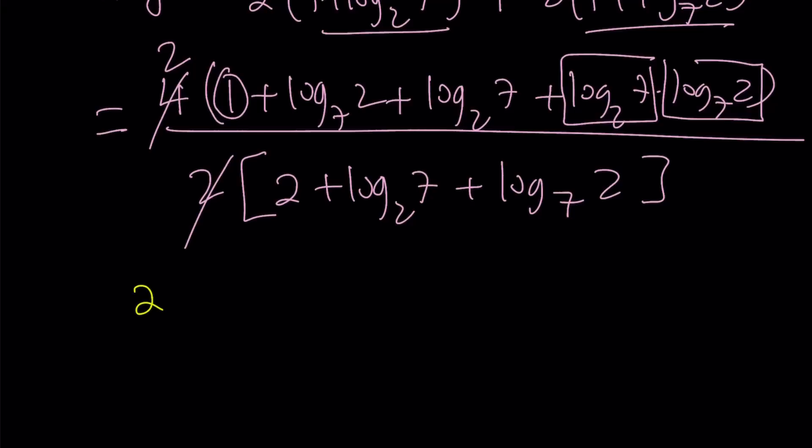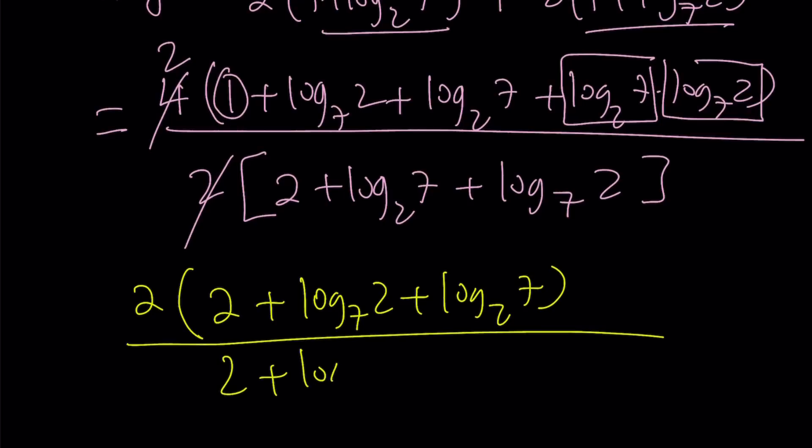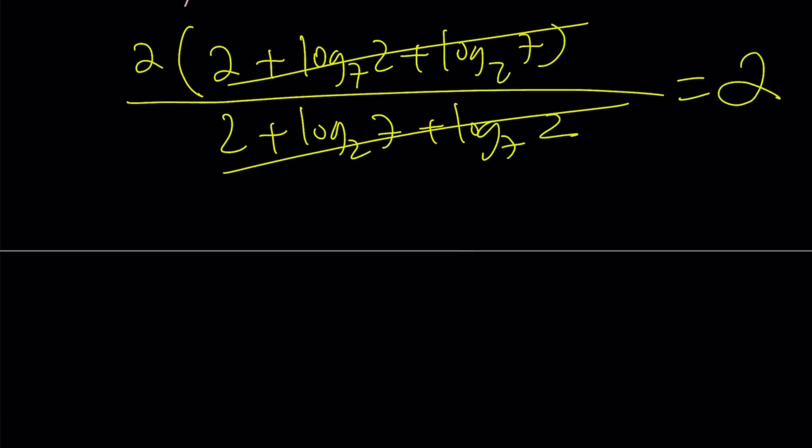So here's what I have. 2 times 2 plus this plus this divided by 2 plus this plus this. And that this and with this, they're going to cancel out and the answer is going to be 2. Wow. That was crazy.